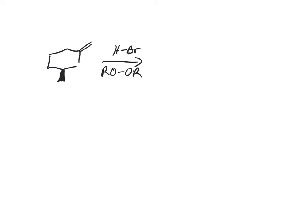With normal HBr, if I number this alkene carbon 1 and 2, bromine is going to end up on carbon 1 — that's the Markovnikov product. The pi bond attacks, making a carbocation on the most substituted carbon, stabilized by hyperconjugation. And we'd get attack from both sides.